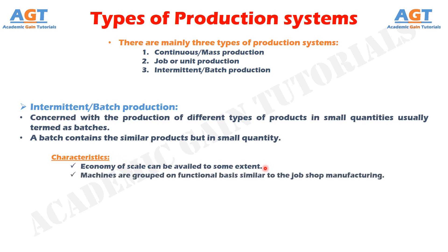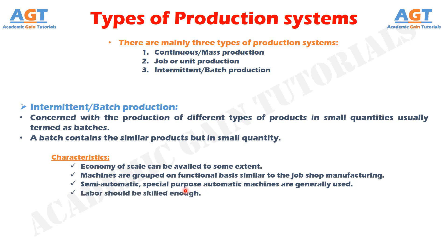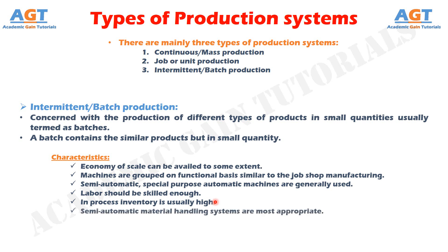Machines are grouped on a functional basis, similar to job shop manufacturing. Semi-automatic and special purpose automatic machines are generally used to take advantage of the similarity among the products. Labor should be skilled enough to work upon different product batches. In-process inventory is usually high owing to the type of layout and material handling policies adopted. Semi-automatic material handling systems are most appropriate in conjunction with the semi-automatic machines.